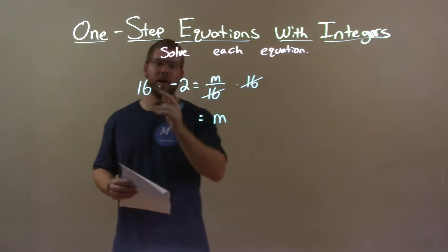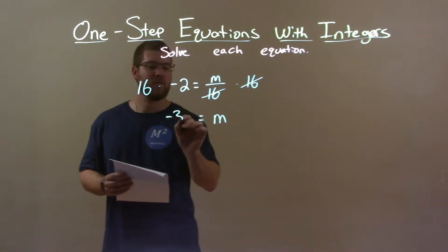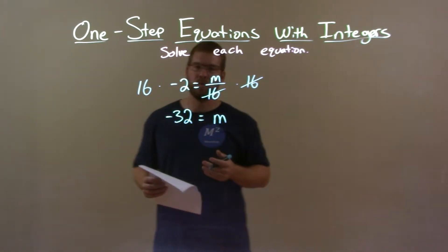So now I have m by itself, but now I have 16 times negative 2. 16 times negative 2 is a negative 32. And so we have negative 32 equals m.